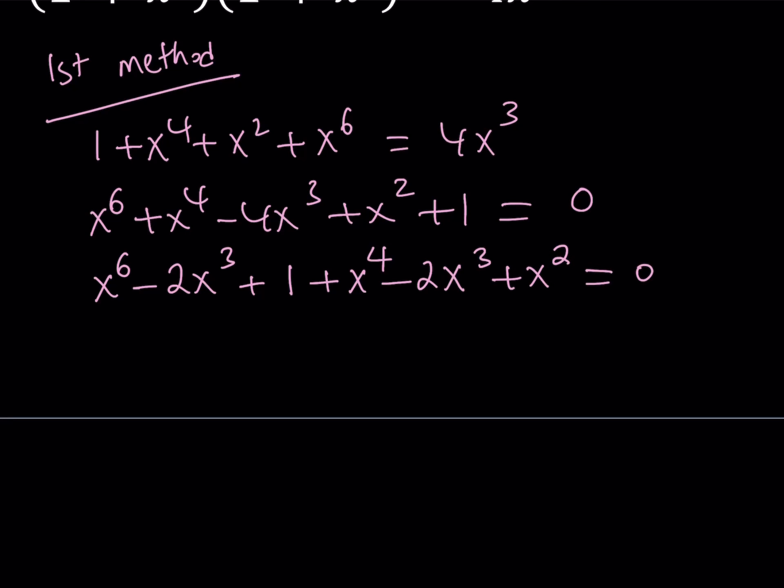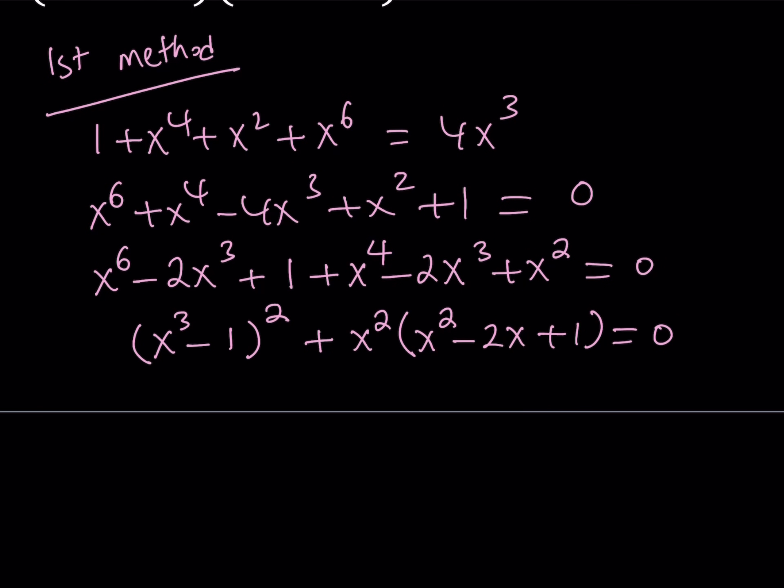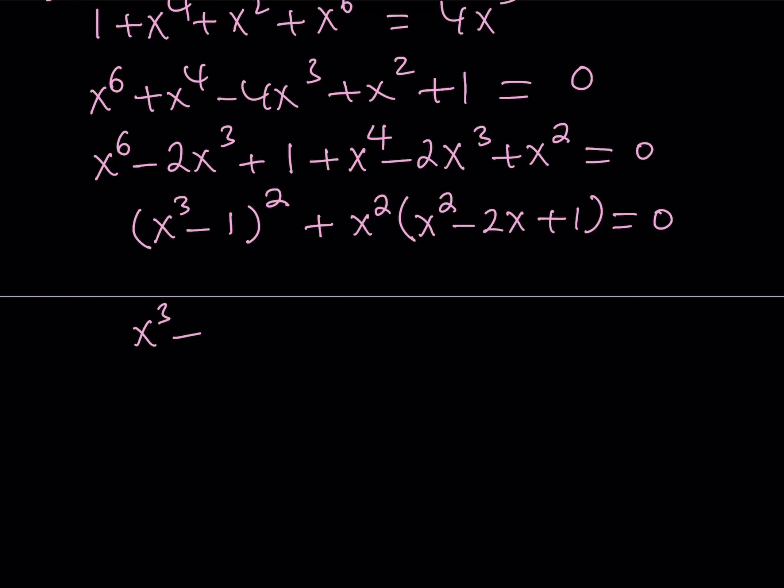Now, notice that x to the 6th minus 2x cubed plus 1, as I said earlier, is a perfect square. And it can be written as x cubed minus 1 quantity squared. Great. What about the rest? Well, the rest is also a perfect square. If you see it, it's good. If you don't see it, we can also write it in a different way. We can first of all take out the x squared. When we do, we get x squared minus 2x plus 1. This should show you that that's indeed a perfect square, but kind of like a product of two perfect squares.